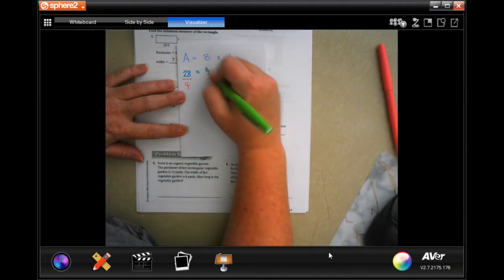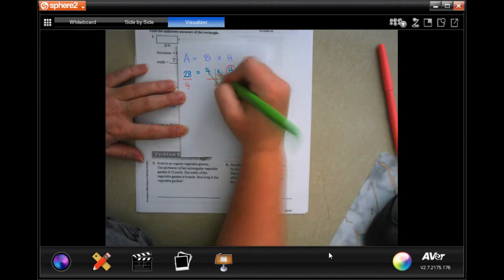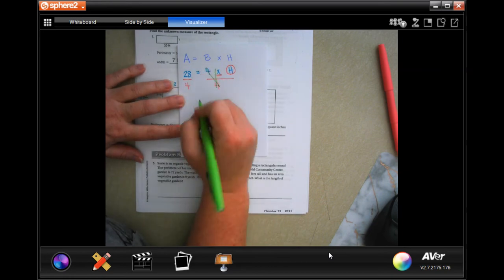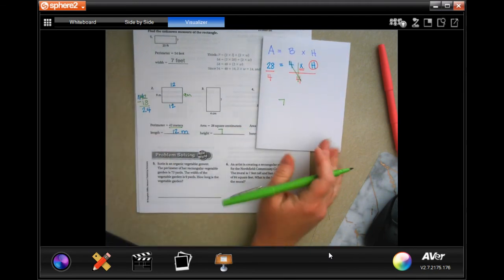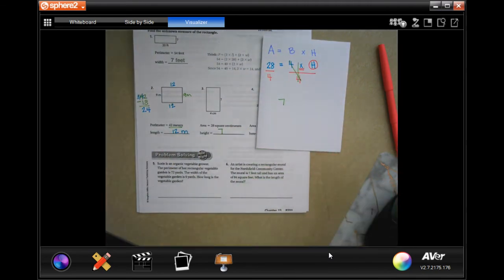Which means these fours cancel out, and 28 divided by four, well, four times seven. There you go. Make sure you guys are writing down your work.